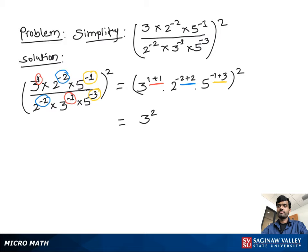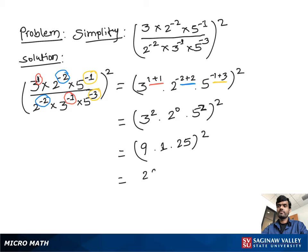We get 3 squared times 2 to the 0 times 5 squared, all to the second power. We can write 3 squared as 9, 2 to the 0 as 1 (because any term raised to the power 0 is 1), and 5 squared as 25, all to the second power.